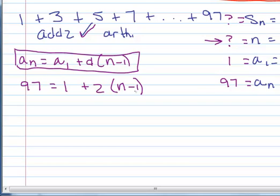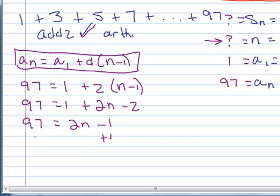So I'm going to leave it like that, and let's solve for n. So 97 equals 1 plus 2n minus 2. 97 equals 2n minus 1. Add 1 to both sides. 98 equals 2n. Divide by 2, and we get n equals 49.